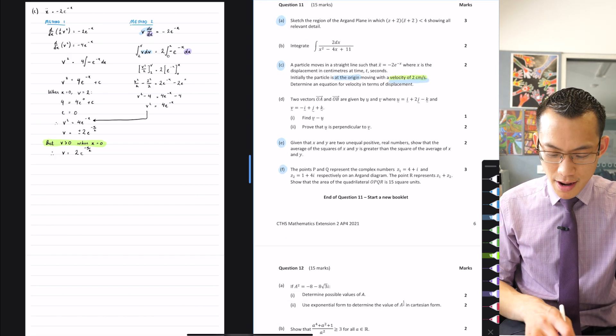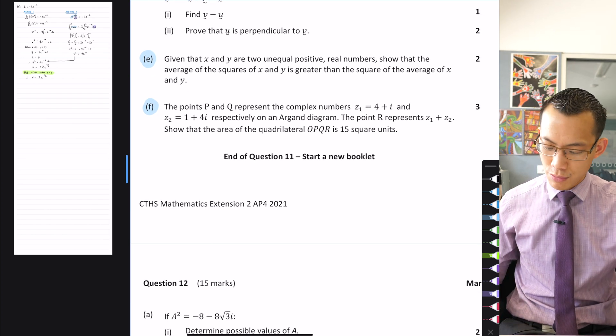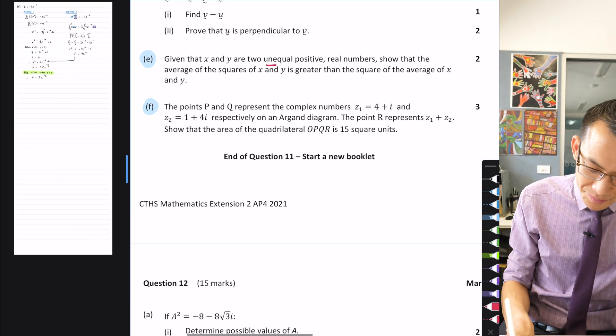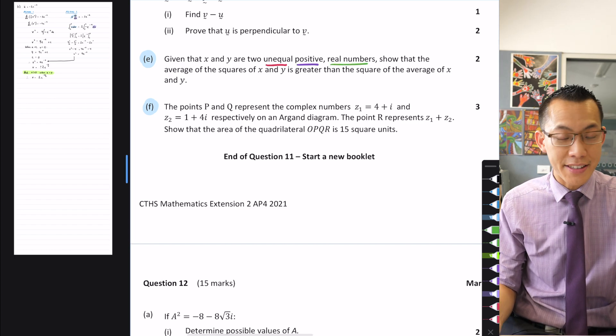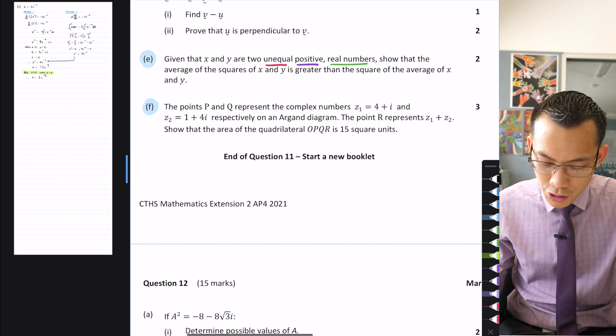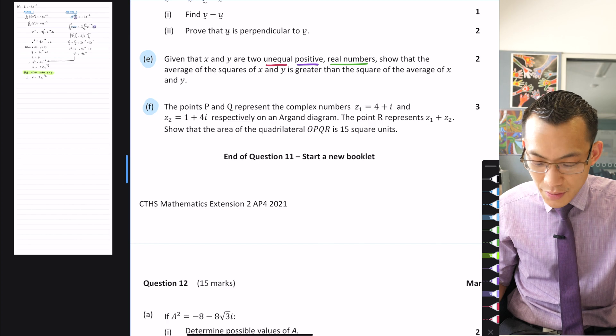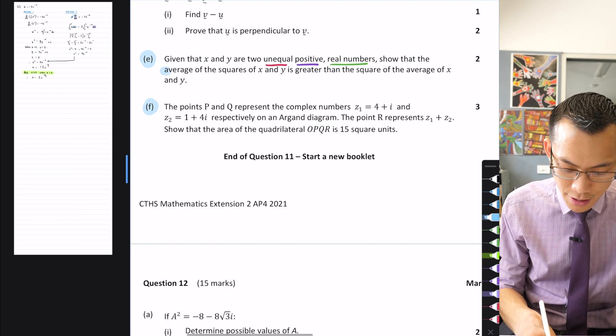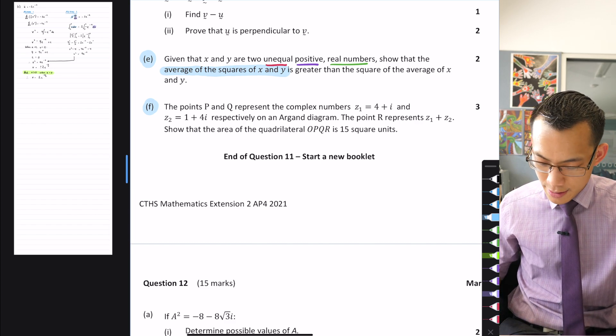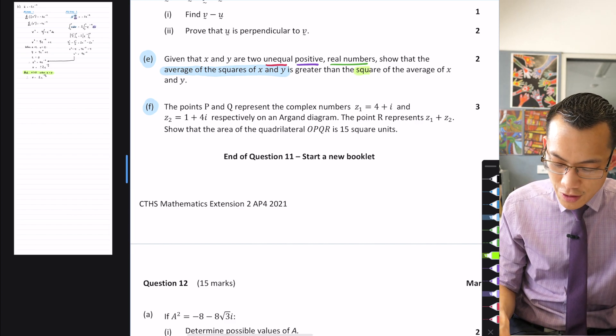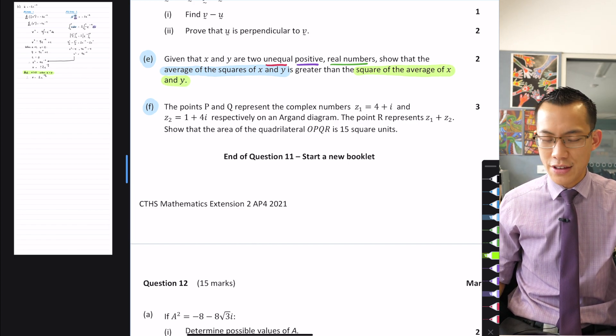The next question that I want us to have a look at was part E, so read it with me. It says, given that X and Y are two unequal, positive real numbers, there's a lot of information already just packed into those few words, show that the average of the squares of X and Y is greater than the square of the average of X and Y. Average of the squares is greater than the square of the average.